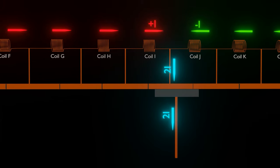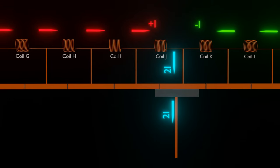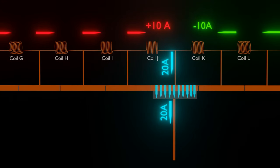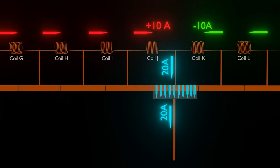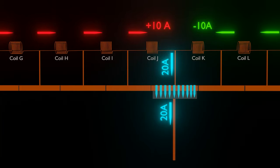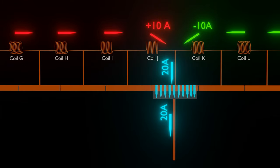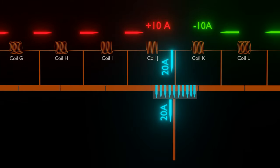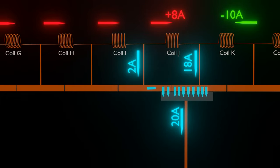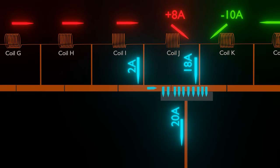When the coil moves towards the right — that is, rotation of the coil takes place — the direction of current in coil J will be reversed from right to left. Suppose coils H, I, and J are carrying current of 10A and coils K and L are carrying current of minus 10A. Then current of 20A will flow through one commutator, because only one commutator is in contact with the brush. When coil J moves to the right, initially a small area of the next commutator will come in contact with the brush.